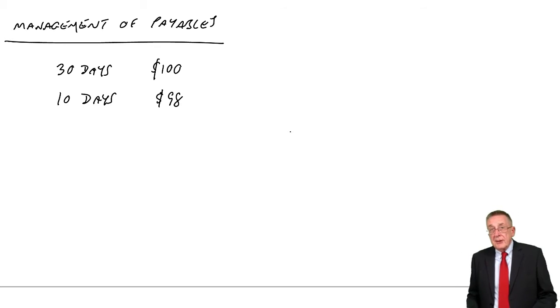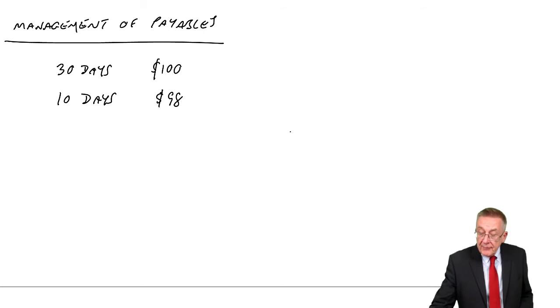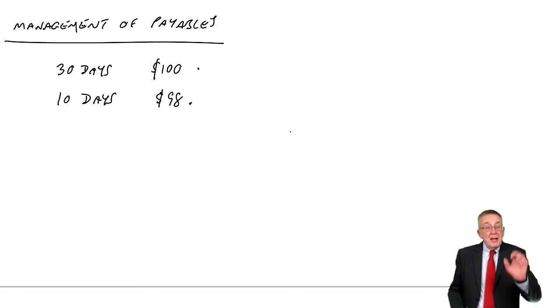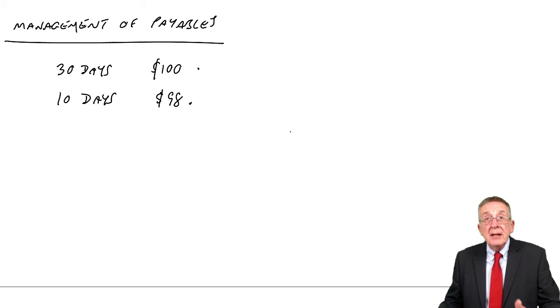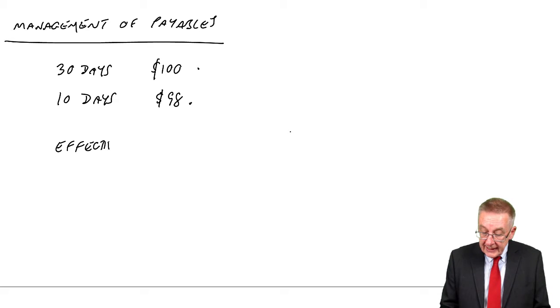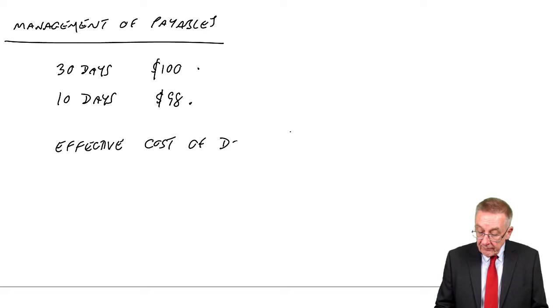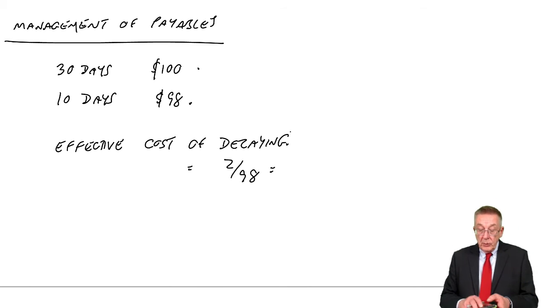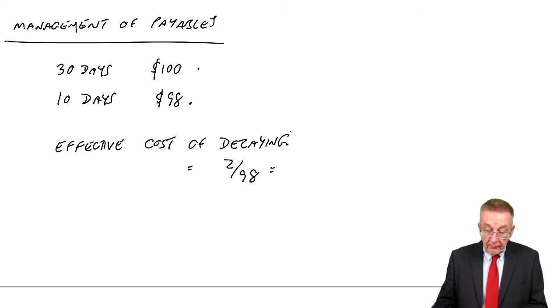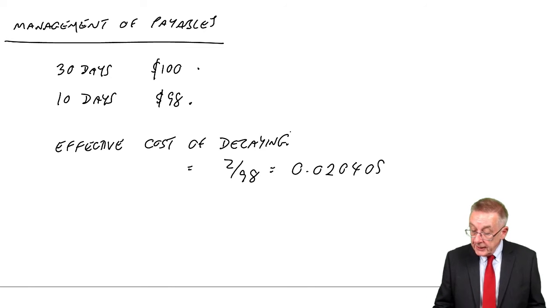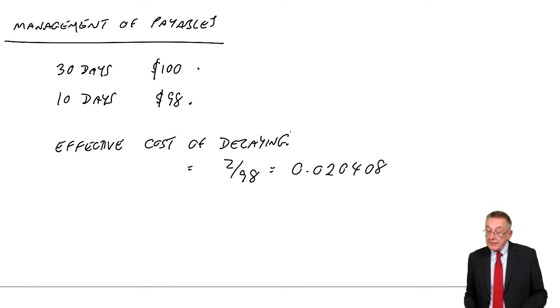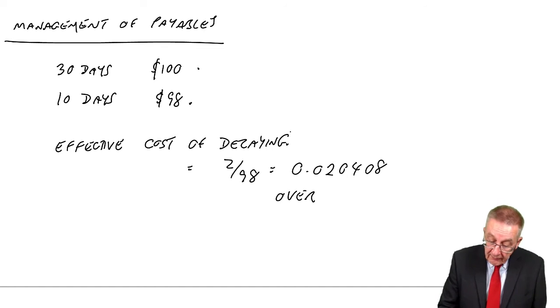Effectively, we need to work out what the annual effective discount that we're getting is. Suppose we received an invoice for $100. At the moment we take 30 days and we pay the full $100. We've now got the opportunity of paying within 10 days, in which case we'll get a 2% discount on the 100, we'd therefore only pay $98. If we don't take the discount and pay later, it's effectively costing us an extra $2. We could have paid $98 in 10 days. Delayed, it's costing $2 on that $98. It's over 10 days up to 30 days, so over 20 days.